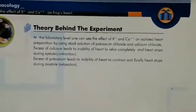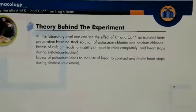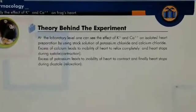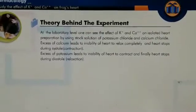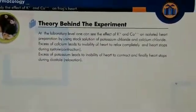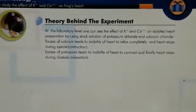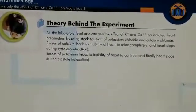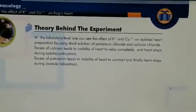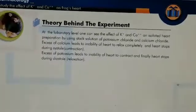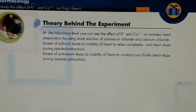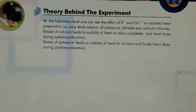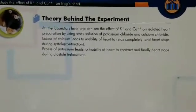At laboratory level, one can see the effect of potassium ions and calcium ions on isolated heart preparation by using stock solutions of potassium chloride and calcium chloride. If we want to see the potassium or calcium effect, we will first prepare the solution — we will make potassium chloride and calcium chloride stock solutions.